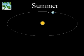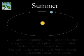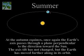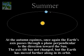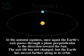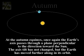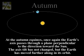At the autumn equinox, once again, Earth's axis passes through a plane perpendicular to the direction toward the Sun. The tilt has not changed, but the Earth has moved along its orbit.